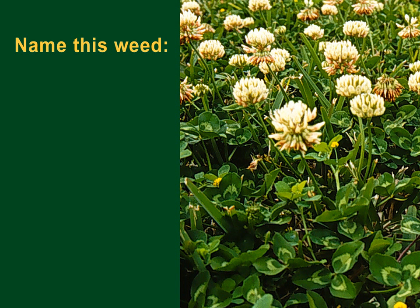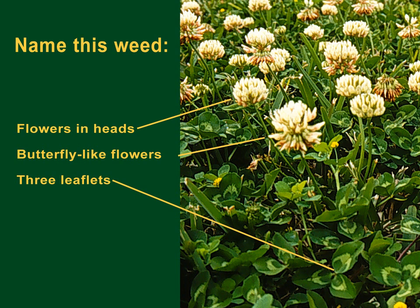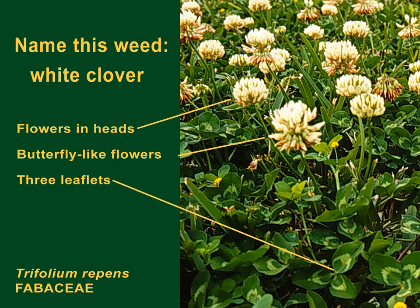Also in the same family is a low-growing weed that can be somewhat attractive, but it can be a real nuisance in lawns. The flowers are in heads, and they too are miniature butterfly-like. The leaves have three leaflets. This weed is white clover, and you'll also notice a little bit of a marking on each leaflet, which is common.